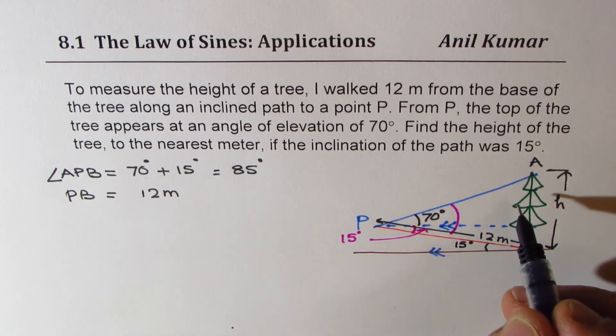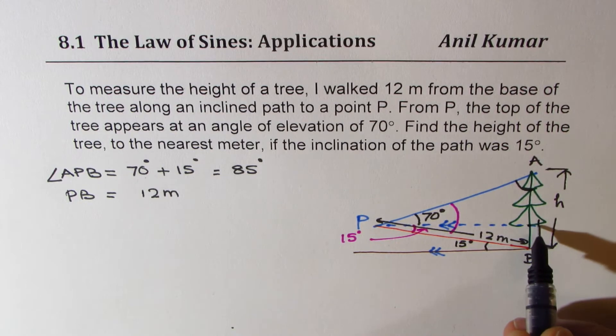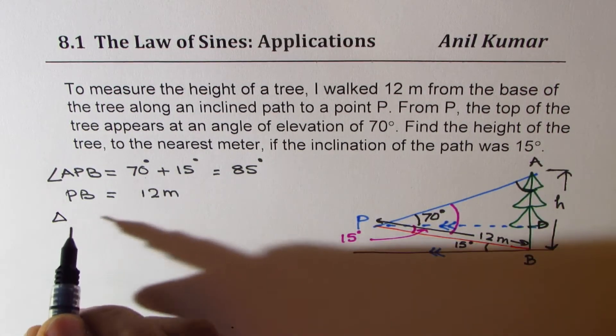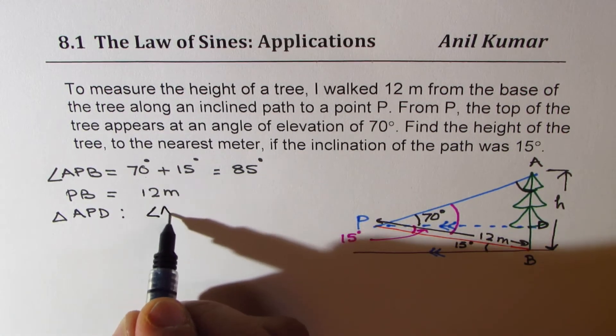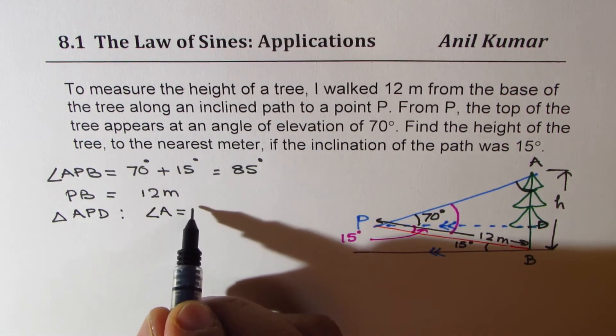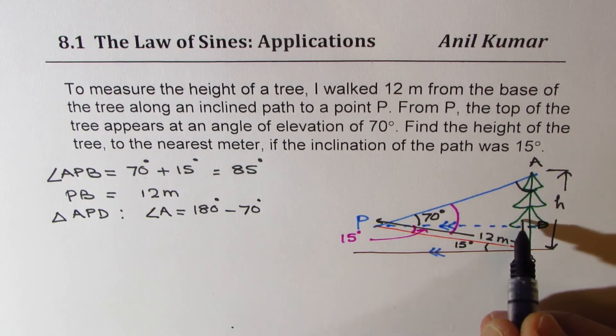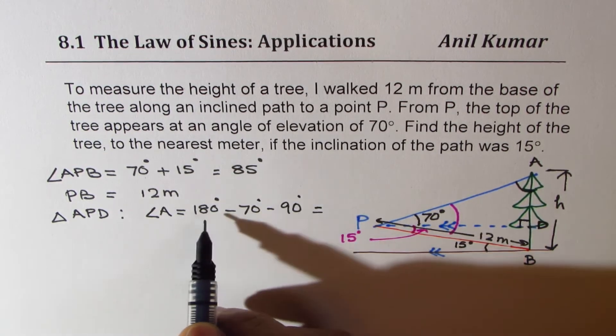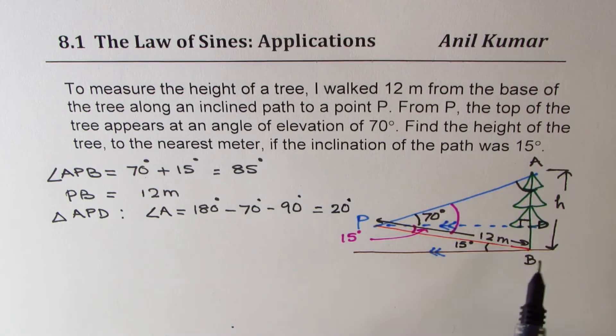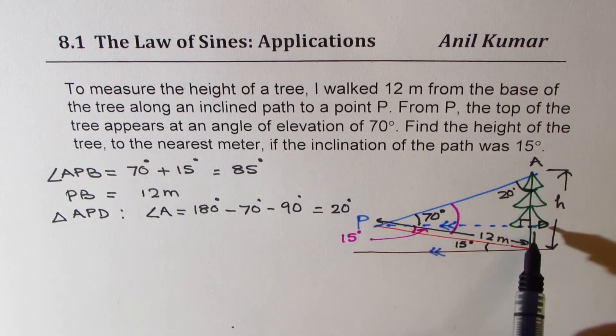So how could you find? We can actually calculate the angle at A since let's call this point as D. So the triangle APD. In this triangle, angle A is equal to 180 degrees, take away 70 degrees, the angle of elevation, and this angle is 90 degrees. Take away 90 degrees. So that gives you 20 degrees. So angle A is 20 degrees. It's a right triangle. Angle APD triangle is a right triangle. So angle A is 20 degrees.